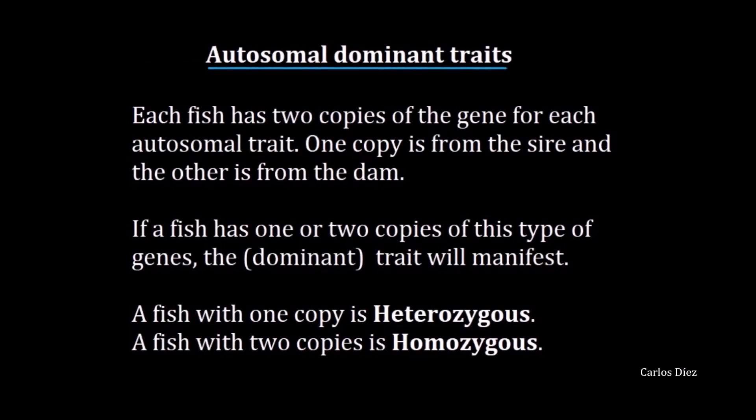Autosomal dominant traits. Each fish has two copies of the gene for each autosomal trait. One copy is from the sire and the other is from the dam. If a fish has one or two copies of this type of gene, the trait will manifest. A fish with one copy is heterozygous. A fish with two copies is homozygous.